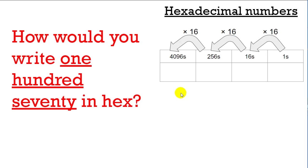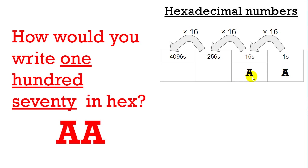Here's an easy one, but it seems hard at first. How would you write one hundred seventy in hex? Well, if you need a hundred and seventy, that's like a hundred and sixty plus ten. You need ten sixteens and ten ones — A sixteens and A ones. A hundred and sixty plus ten more is a hundred and seventy. This is how you write a hundred and seventy in hexadecimal.